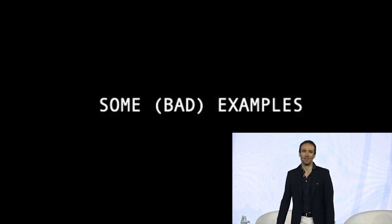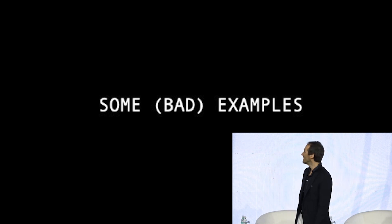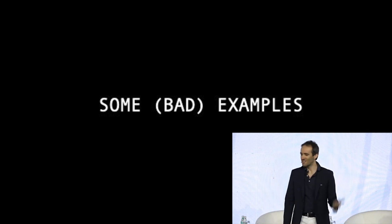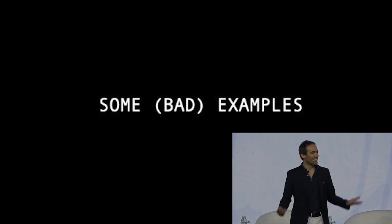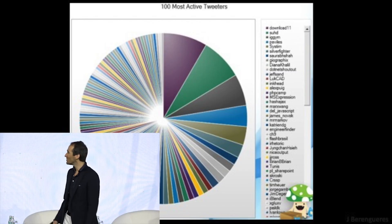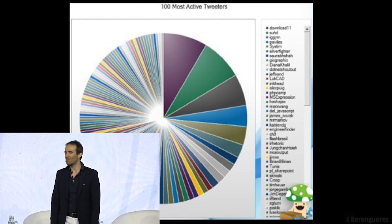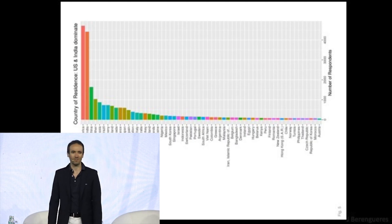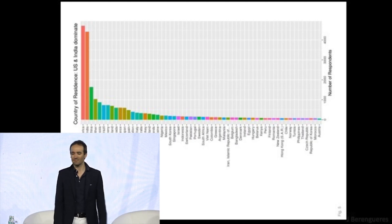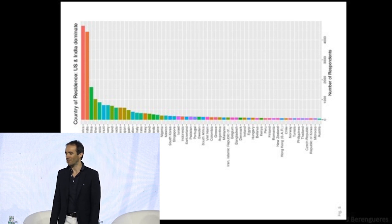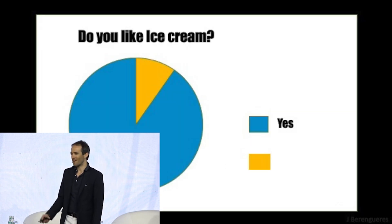I'm going to show you some examples from the internet. This is a chart representing the hundred most active accounts — wrong chart for the job. This is another chart: number of data scientists per country — information overload. And my favorite, the useless chart.